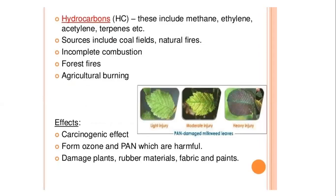Hydrocarbons include methane, ethylene, acetylene, and terpene. Sources include coal fields, natural fires, incomplete combustion, forest fires, and agricultural fires. They have a carcinogenic effect and can form ozone and PAN, which are harmful. They also damage plants, rubber materials, and fabric and paint.